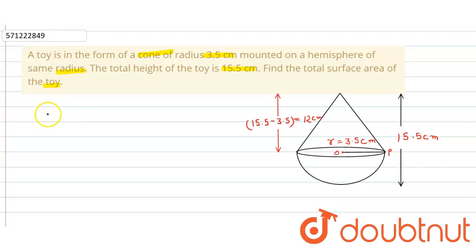So here the radius is given to be 3.5 centimeter. For the height of the cone, we subtract 3.5, which is the radius of hemisphere, from the total height which is 15.5. So height of cone we get 15.5 minus 3.5 equals 12 centimeter.